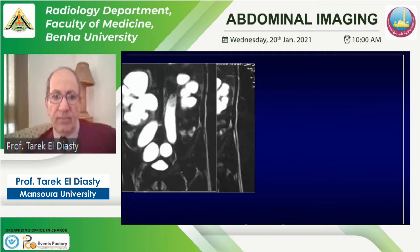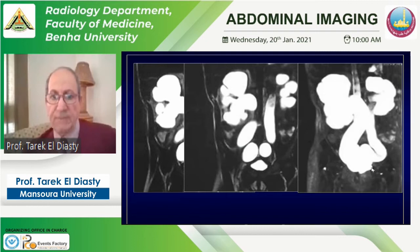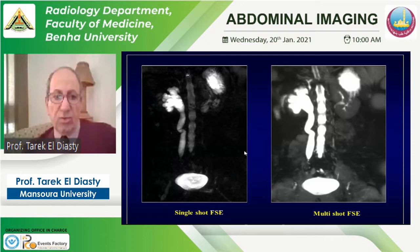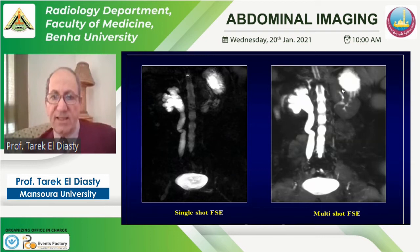Here is another patient with a single coronal slice and a maximum intensity projection image. Comparing the single shot fast spin echo with the multi-slice technique, in the single shot there is marked suppression of soft tissue, whereas in the multi-slice technique we can see the soft tissue of the kidney.